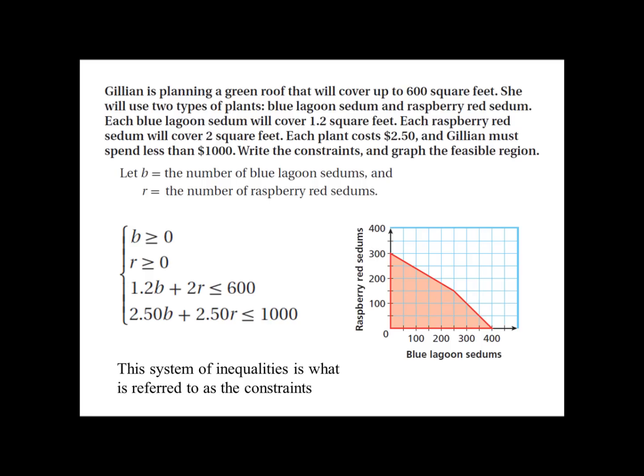It says Jillian is planting a green roof that will cover up to 600 square feet. She will use two types of plants: blue lagoon sedum and raspberry red sedum. Each blue lagoon sedum will cover 1.2 square feet and each raspberry red sedum will cover 2 square feet. Each plant costs $2.50 and Jillian must spend less than $1,000. It asks us to write the constraints and graph the feasible region. They tell us to let B equal the number of blue lagoon sedums and R the number of raspberry red sedums.